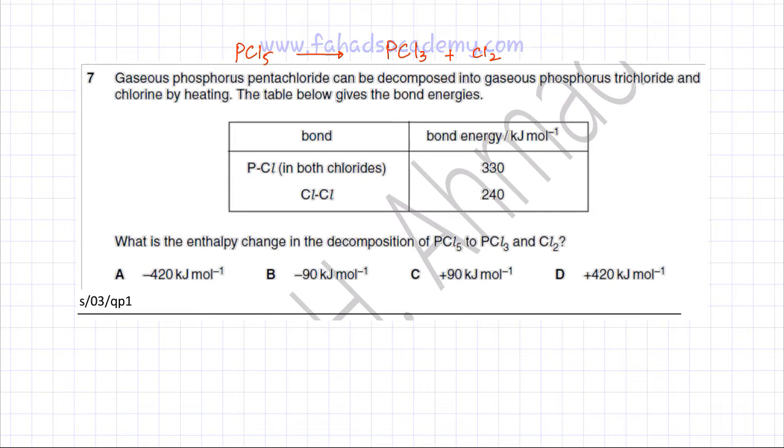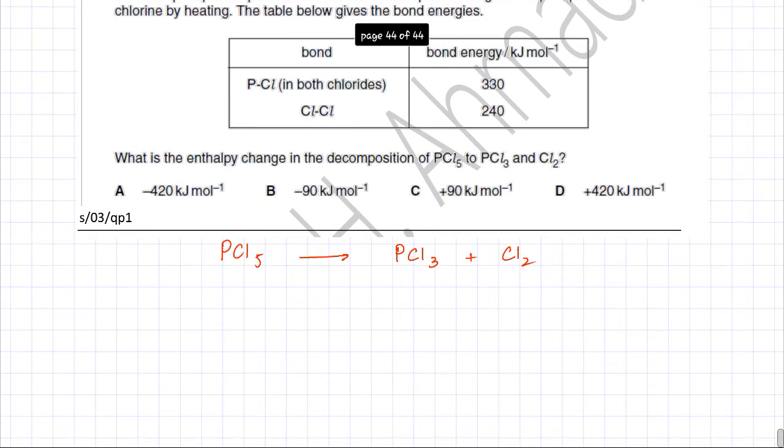Let's rewrite the reaction first. PCl5 decomposes into PCl3 and forms Cl2 as well. This is the decomposition reaction. The first thing we need to figure out is which bonds are broken and which bonds are formed.